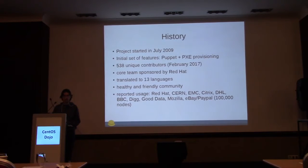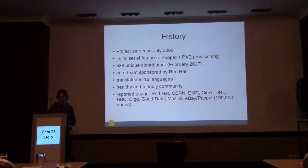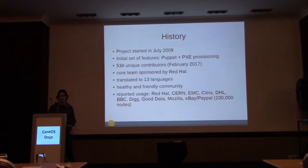A little bit about the history: Foreman started in 2009, so it's quite a mature project. It initially focused on plugin provisioning, as you can see we do a lot now. Every release has about 90 different contributors. It's quite a stable core group - the core team itself is sponsored by Red Hat, because Foreman is the upstream for Satellite 6, along with the Katello plugin. The Foreman community is great - lots of friendly, helpful people.